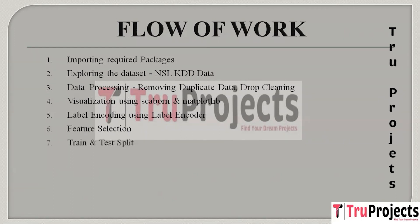The next step is train and test split, where we segregate the dataset into training and testing subsets. The training subset is used for model learning, while the testing subset evaluates the model's performance on new data. Following this, we develop and evaluate various machine learning models.